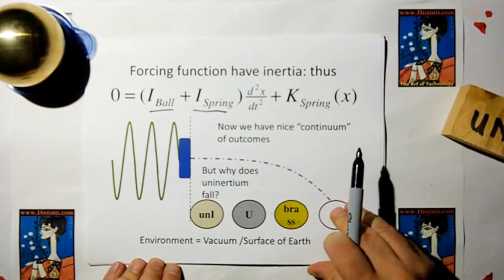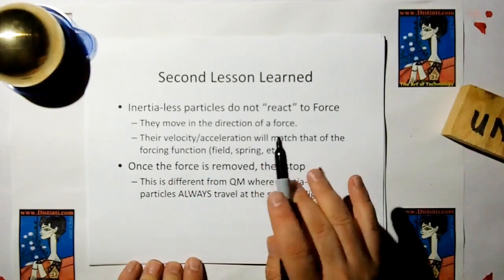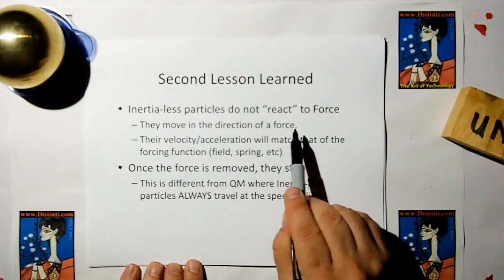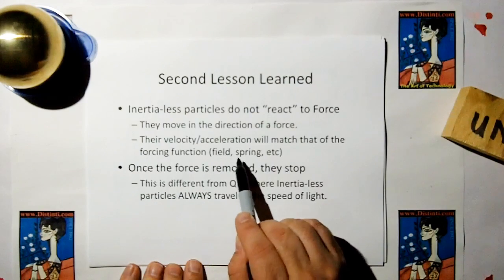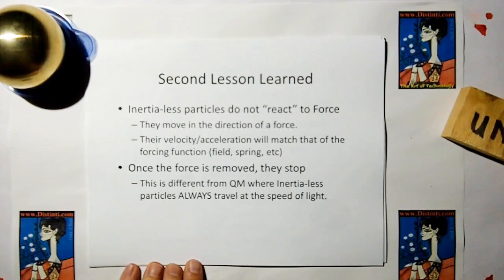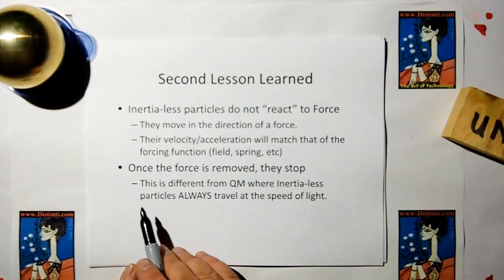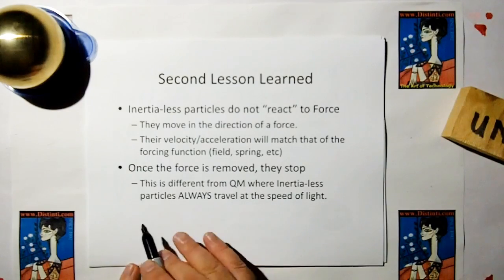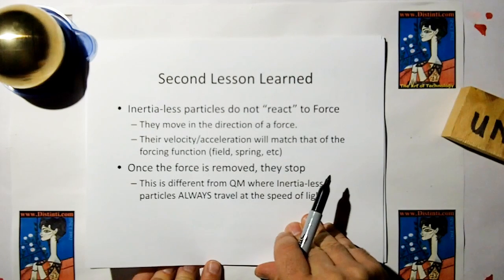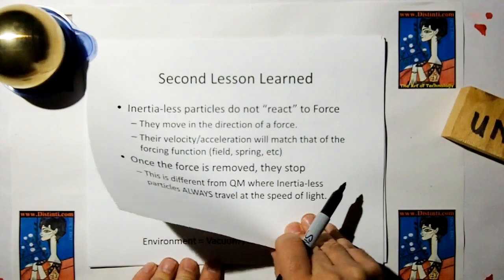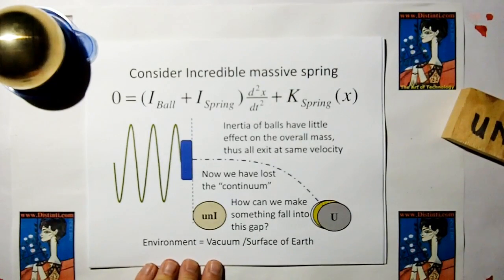The other question is: why does uninertium fall? Inertialess particles do not react to force — they move in the direction of a force, and their velocity and acceleration will match that of the forcing function, whether spring, field, or whatever. Once the force is removed, uninertium stops. This is different from quantum mechanics, where inertialess particles always travel at the speed of light. The gravitational field on uninertium will cause it to fall toward the massive body — it's not accelerated, it's really just moved. We'll talk more about that when we discuss what gravity is.